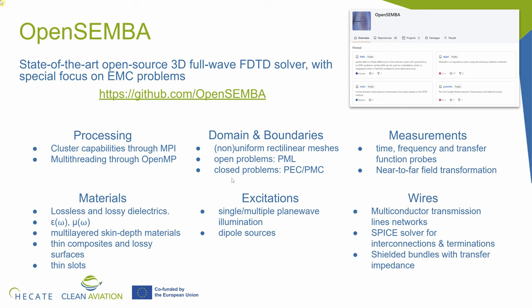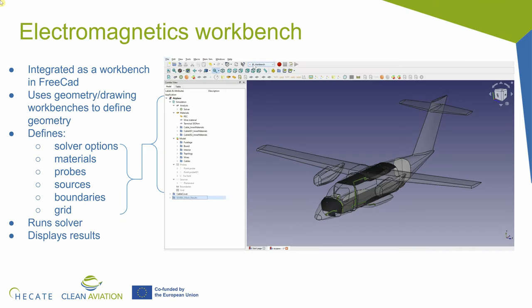To make this solver more usable and user-friendly, it has been implemented as a workbench in FreeCAD. FreeCAD offers the possibility to use many different workbenches for different applications — for example, geometry workbenches, drafting, and physical applications of mechanics. We have added a new one, which is the electromagnetic workbench. So now in FreeCAD you can use the native geometry workbenches to design your problem, and then use the electromagnetic workbench to define the materials, which outputs you want, sources, boundaries, discretization, and many solver options such as the type of measurement, the time step, the final time — and you can also run the solver and display the results.